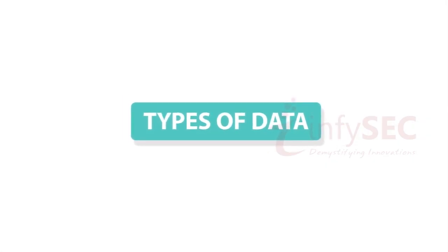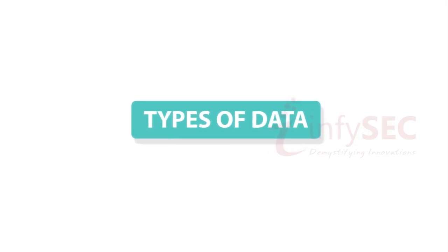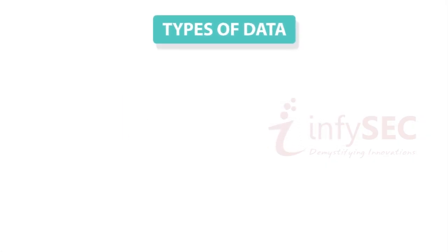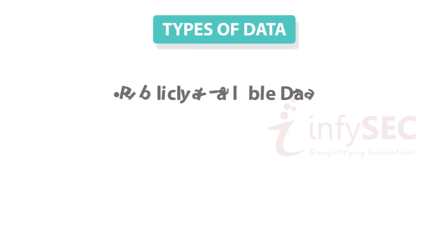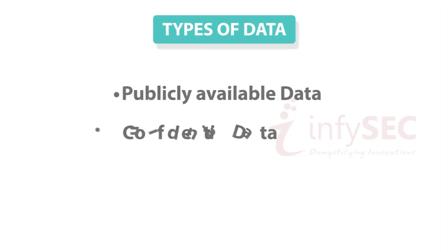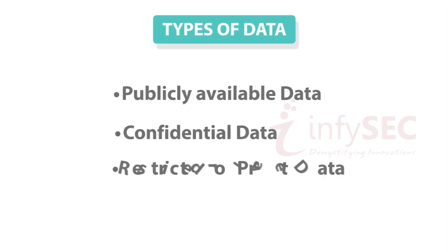Types of data. Data can be classified as publicly available data, confidential data, and restricted or private data.